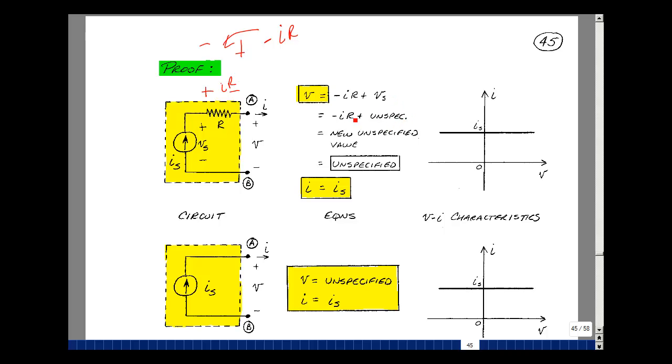So again, if you subtract a number or add it to an arbitrary number, you just get another arbitrary number. We can just replace this by just simply an arbitrary value or just unspecified. The current I here is simply the current that leaves the node, and the current that enters the node is the current source I sub S.